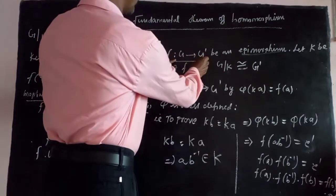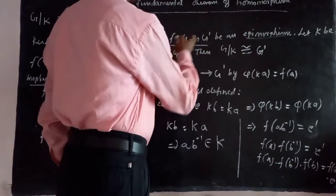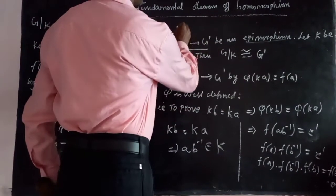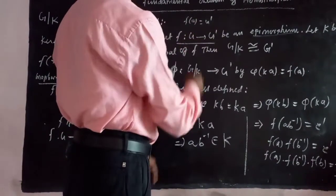The format is: F of A, where A is one element in G, so F of A gives an element in G' — all elements of G' are reached.